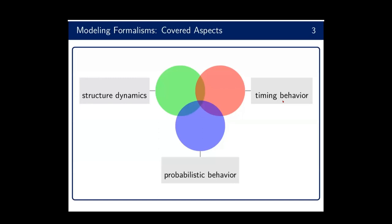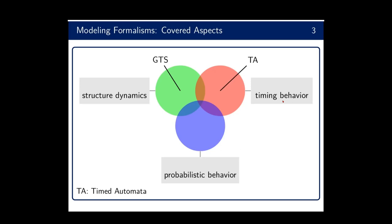We want a suitable modeling formalism for all these kinds of systems. We consider three relevant aspects: structure dynamics, timing behavior, and probabilistic behavior. There are existing formalisms such as graph transformation systems that feature structure dynamics but not timing or probabilistic behavior. Timed automata feature timing behavior based on clocks, clock resets, clock invariants, and clock guards. Probabilistic automata feature probabilistic behavior.